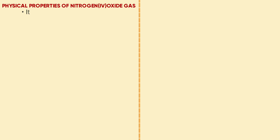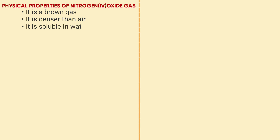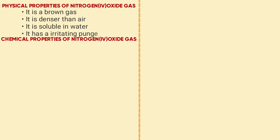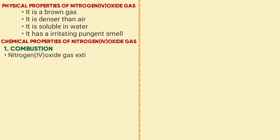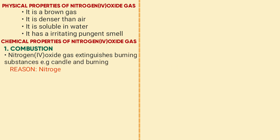Physical properties of nitrogen dioxide: it is a brown gas, denser than air, soluble in water, and has a pungent smell. Chemical properties — combustion: nitrogen dioxide extinguishes burning substances, e.g., a candle and burning splint. Reason: nitrogen dioxide gas does not support combustion.